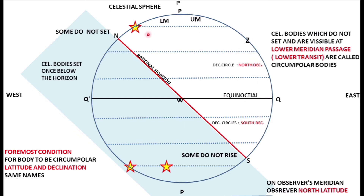We are in north latitude and the declination is also north. The most important condition for a body to be circumpolar is that the body has to have the same name declination as the latitude of the observer. If the body is circumpolar somewhere in the south pole, it will be visible only to someone in south latitude. So the most important thing is that latitude and declination have to have the same name.